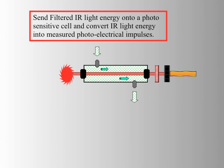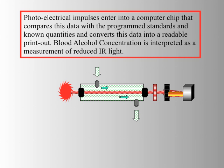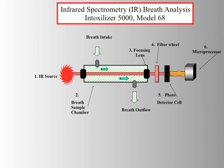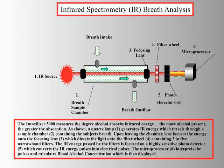Once the sensor at the other end of the sample chamber receives the light data, it's passed through to a microprocessor which does the calculations. Once the microprocessor does the calculations, it produces a result that reads in terms of blood alcohol measurement. As you can see here, this is a diagram of the internal workings of the Intoxilyzer 5000 machine, provided by Mr. Young.